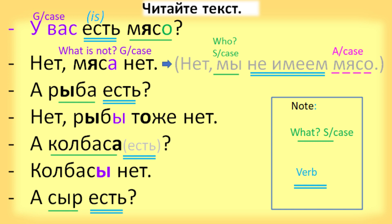А рыба есть? Do you have fish? Нет, рыбы тоже нет. No, there is no fish either. А колбаса? What about sausage? Колбасы нет. There is no sausage.